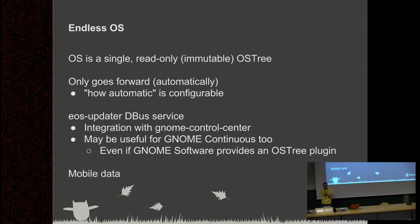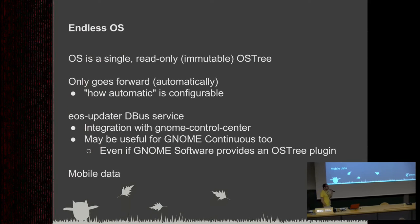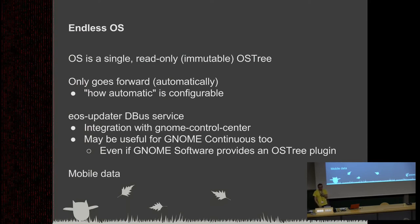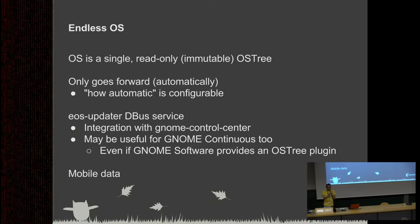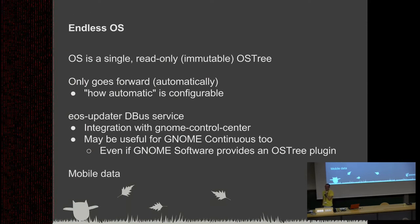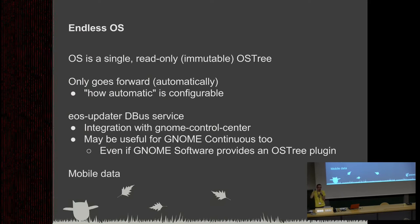There's no apt, to be precise. The OS is a single, read-only, immutable OS tree. We use OSTree as the distribution mechanism for the OS bits and other things. The OS only goes forward — you can update from version one to version two to version three, you cannot add something else. It goes forward automatically: we download updates whenever available, deploy the new OS tree, and when ready, we show the user a notification asking if they want to restart now. When the user presses restart, they don't reboot to a broken system, hopefully.